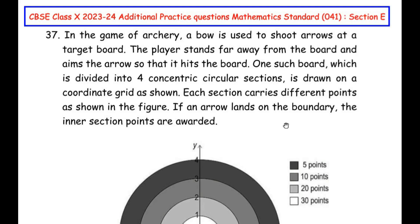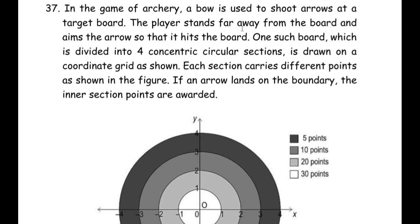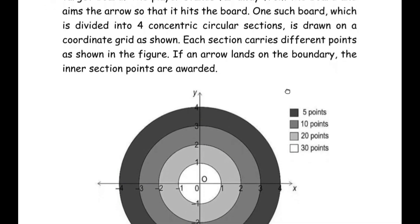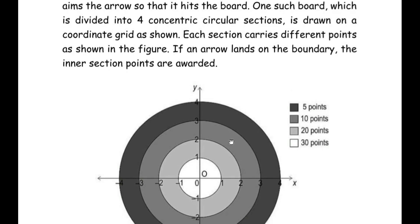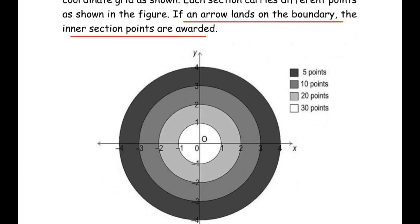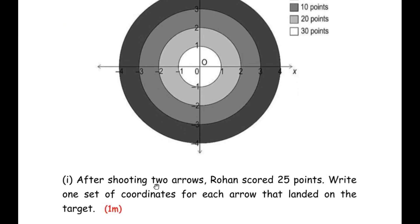This question is from the Coordinate Geometry chapter. In the game of archery, a bow is used to shoot arrows at a target board. The player stands far away from the board and aims the arrow so that it hits the board. One such board which is divided into 4 concentric circular sections is drawn on the coordinate grid as shown. Each section carries different points as shown in the figure. If the arrow lands on the boundary, the inner section points are awarded. The first sub question is: after shooting two arrows, Rohan scored 25 points. Write one set of coordinates for each arrow that landed on the target.